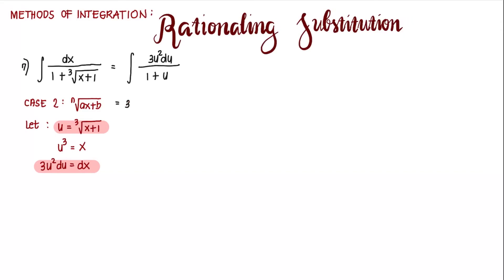We put the constant outside: 3 times the integral of u squared du over u plus 1. This is an improper fraction, so we perform long division — dividing u squared by u plus 1.